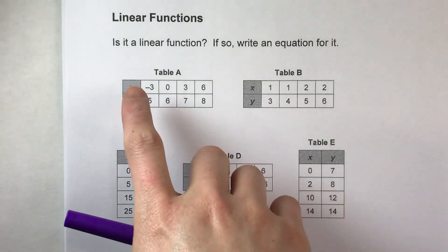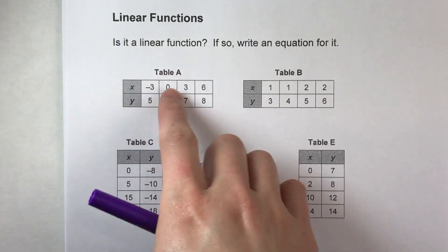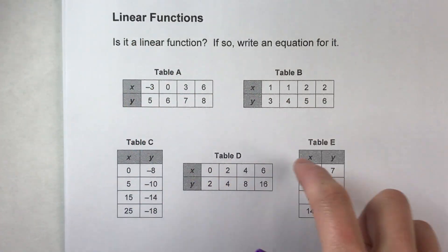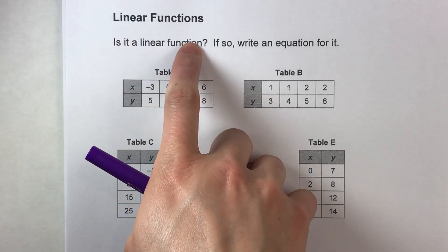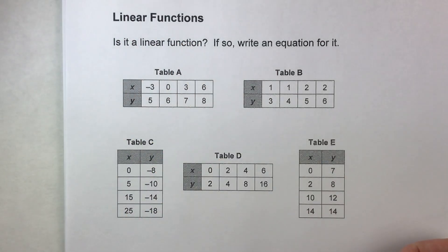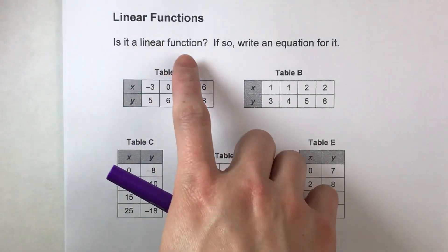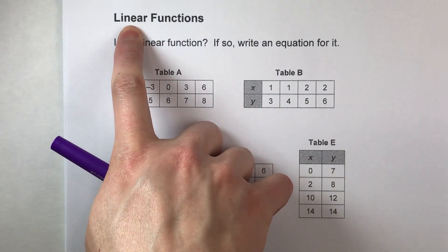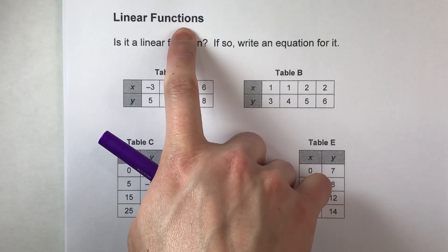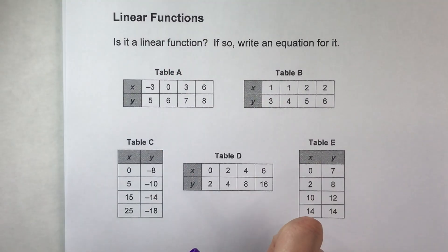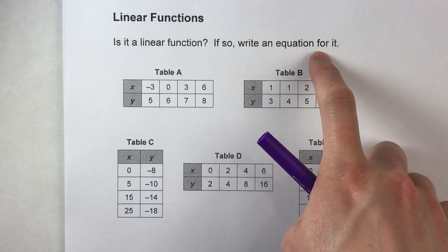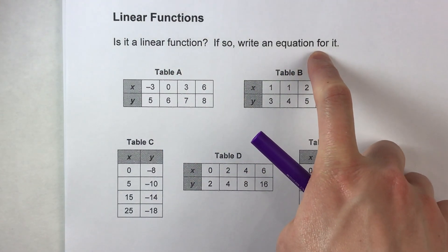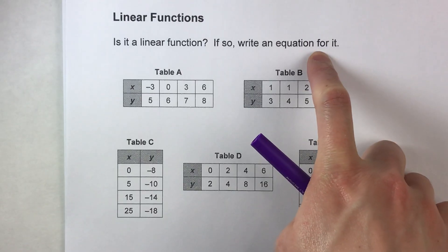Today we are looking at tables and trying to decide: are these linear functions? In order for something to be a linear function, it has to be both linear and a function. If it is, then we write an equation for it. Let's go through these and decide.